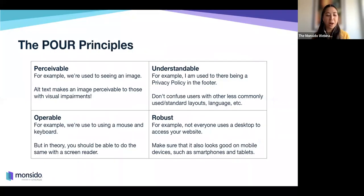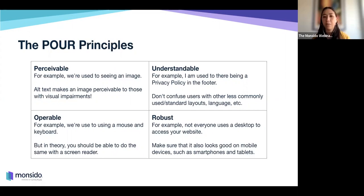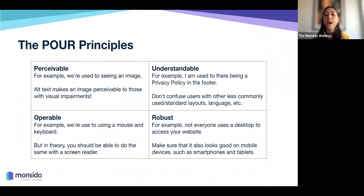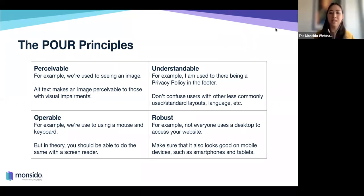I also wanted to talk about the POUR principles — your website needs to be Perceivable, Operable, Understandable, and Robust. Perceivable: we're used to seeing images, and alt text makes that image perceivable to someone with visual impairments. Operable: we're used to using a mouse and keyboard, but in theory you should be able to operate the website in the same way with a screen reader. Understandable: this is about consistency and user experience — making sure it's user-friendly, such as always having a privacy policy in the footer. Robust: not everyone uses a desktop — make sure it's also accessible on mobile devices like smartphones and tablets.